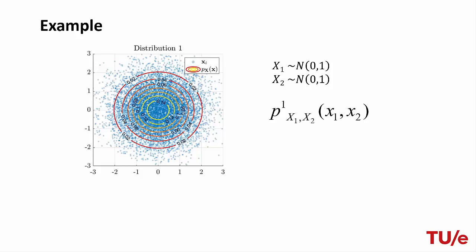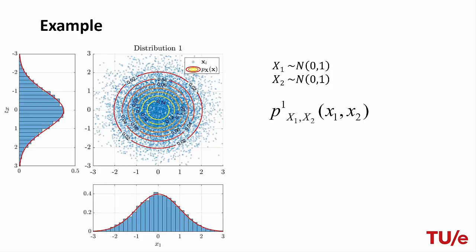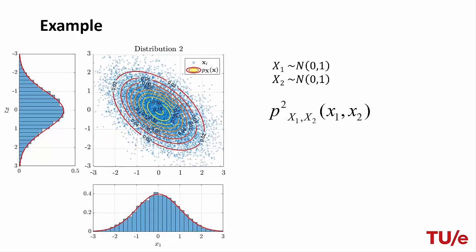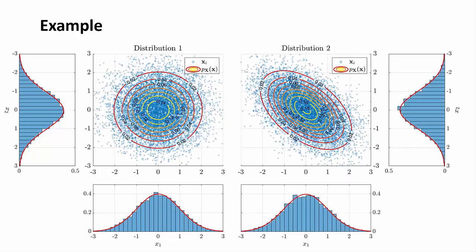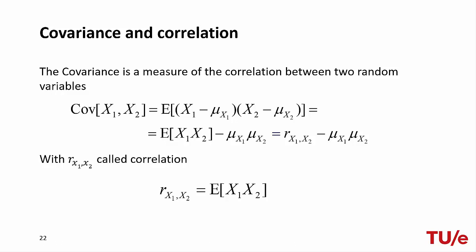Looking at the scatter plot, we obtain a bidimensional Gaussian distribution. The histograms of the two marginals show that x1 and x2 are identically distributed with the same PDF. However, if we repeat the simulation for a different joint probability model, the scatter plot changes, but the two marginals remain the same. When we look at the two simulations side by side, we can appreciate that although the marginals are the same, the joint PDFs are indeed different. The reason the scatter plots differ is because x1 and x2 have different covariance in the two cases.